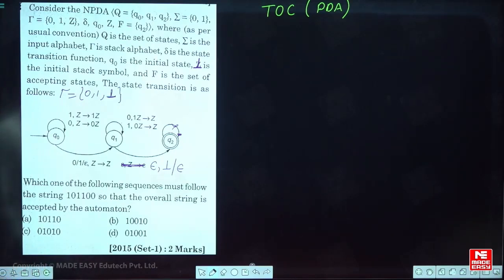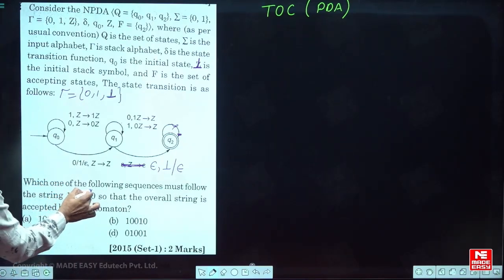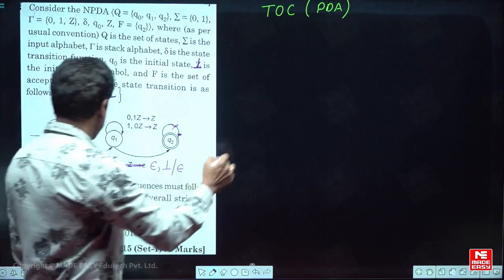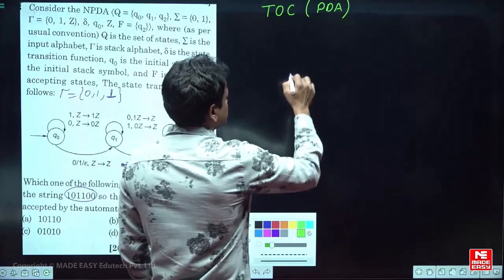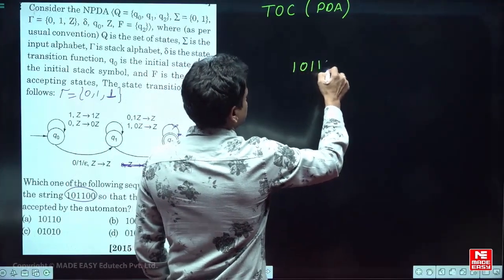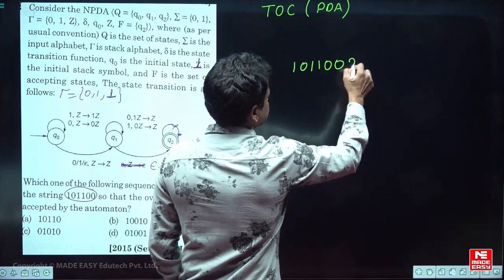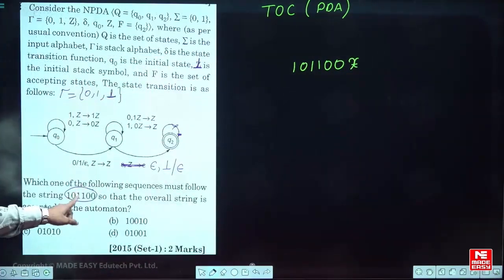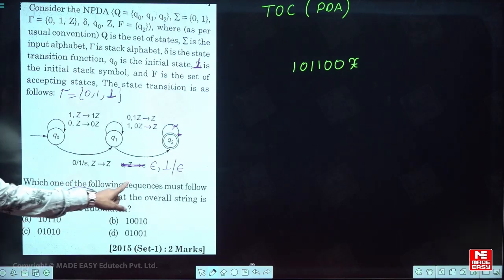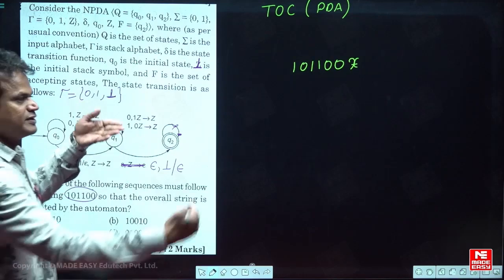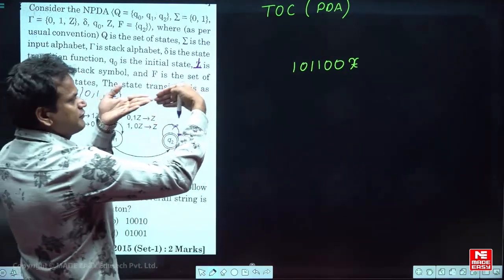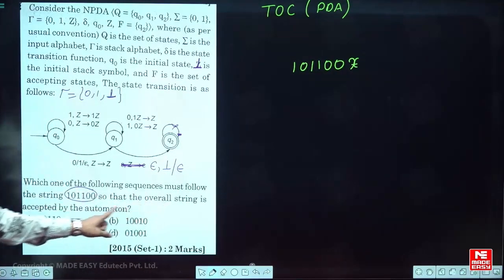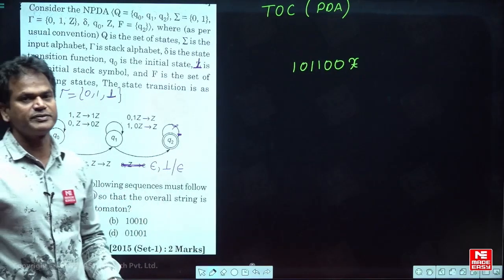Here, if you observe this diagram, it is passing the input string 1, 0, 1, 0. The question asks: by adding some string x, which one of the following sequences must follow this string, so that the overall string is accepted by the automata? Among options A, B, C, D, which string if attached makes the total string accepted by this given machine?